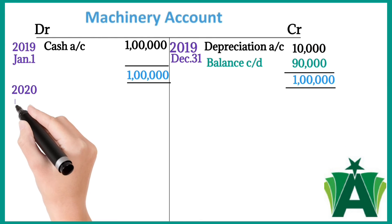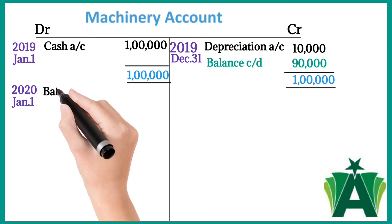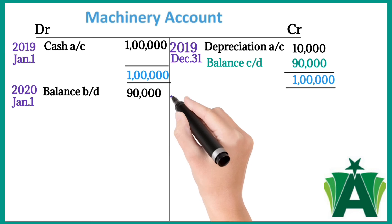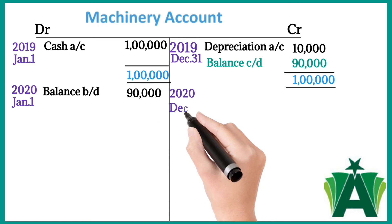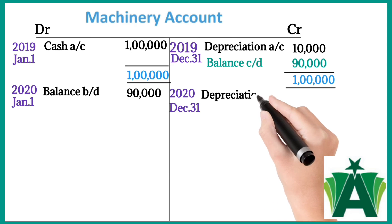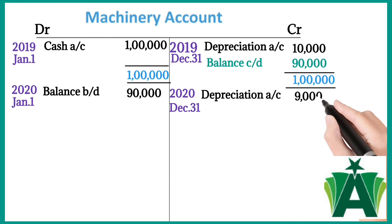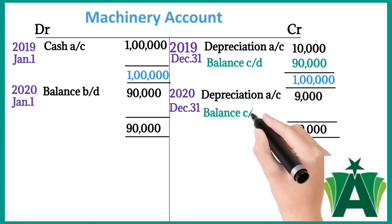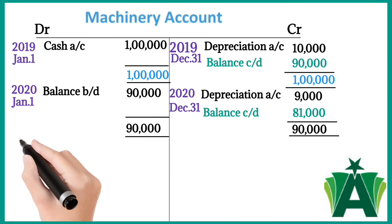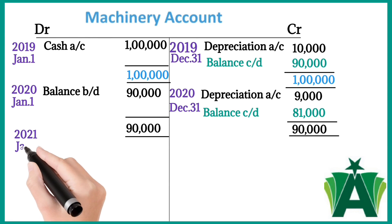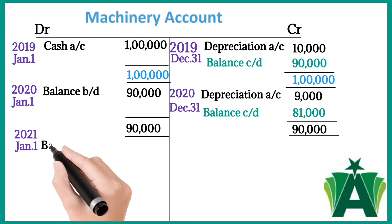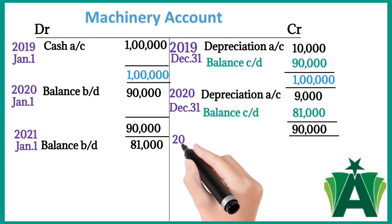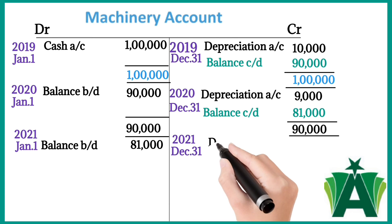For 2020, January 1st, the opening balance of the machinery account is 90,000. On December 31st, the machinery account is credited with reference to the depreciation account for 9,000. The closing balance of the machinery account is 81,000.